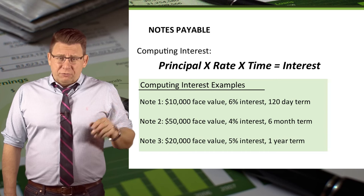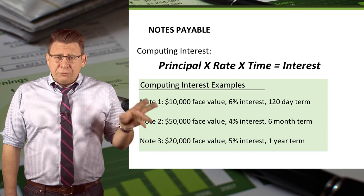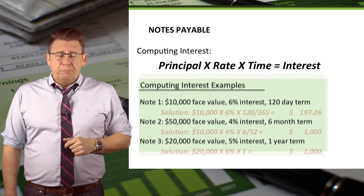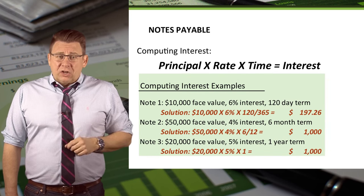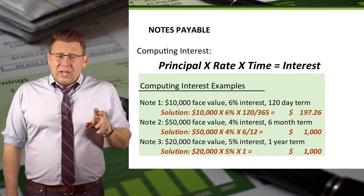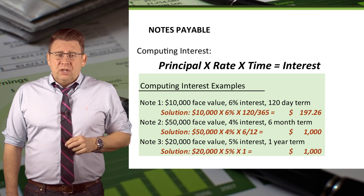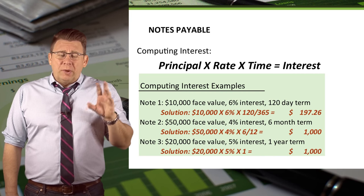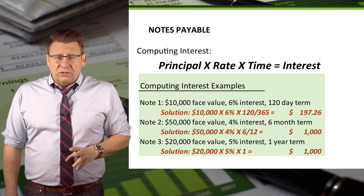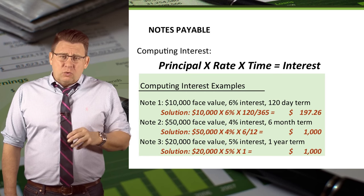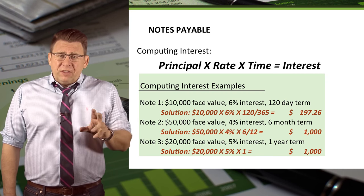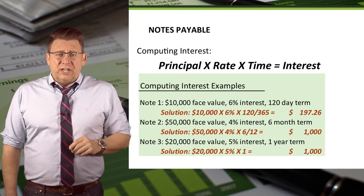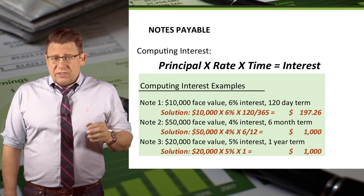Here are some examples to reinforce that point. We have three notes. For note one, interest is $10,000 times 6% interest times 120/365, which is equal to $197. You can see that the term 120 days is converted into years by dividing 120 by 365. For note two, the interest is $50,000 times 4% interest times 6/12, which equals $1,000.